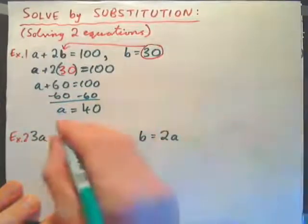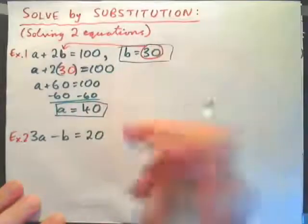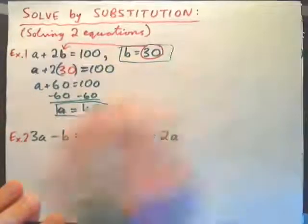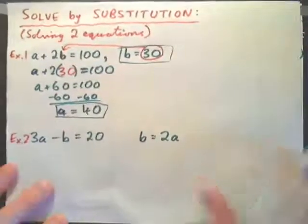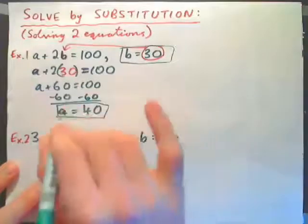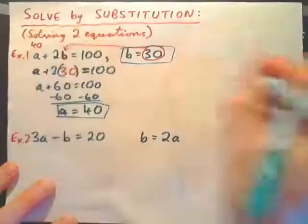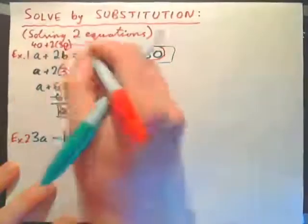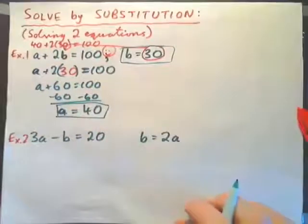We are done because we have found all numerical values: an apple is 40 cents and a banana is 30 cents. We can check by plugging in — 40 plus 2 times 30 is 40 plus 60, which is indeed 100. So this equation works out.